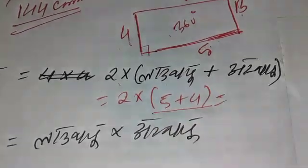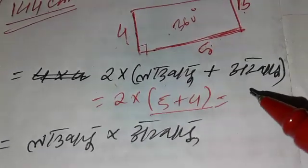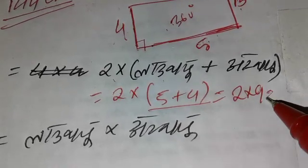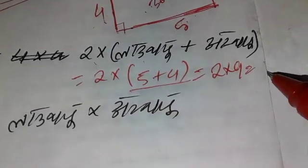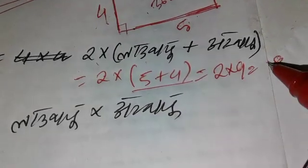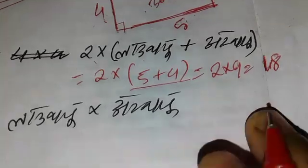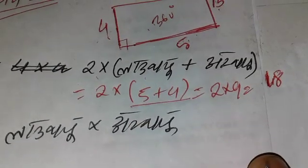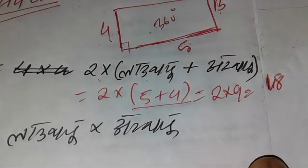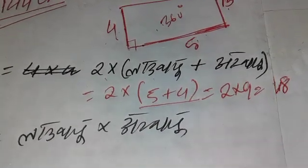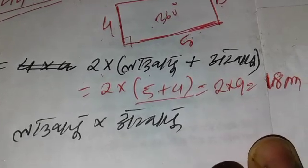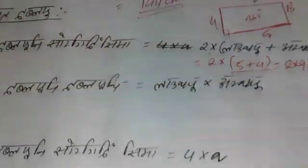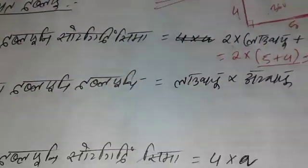Continuing the data sequence: 5, 5, 5, 6, 6, 6, 7, 7, 8, 9, 9, 9, 9, 9.